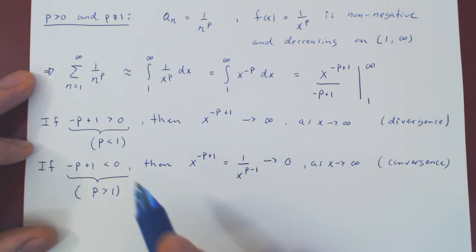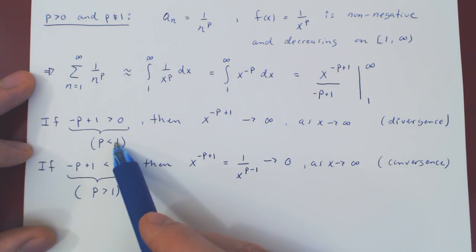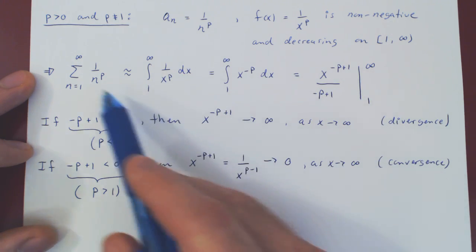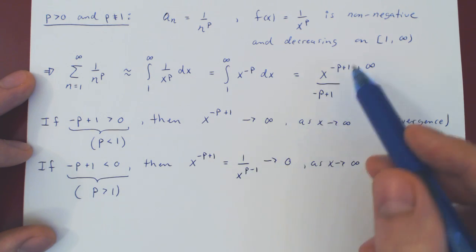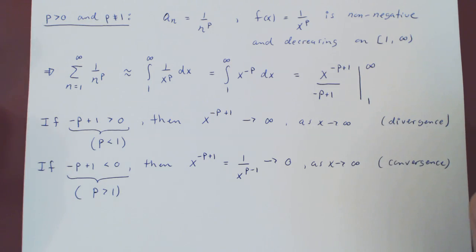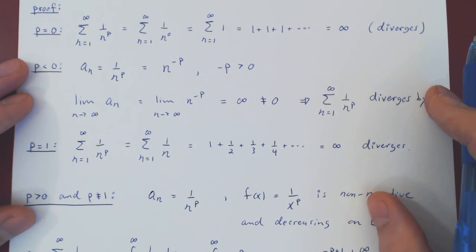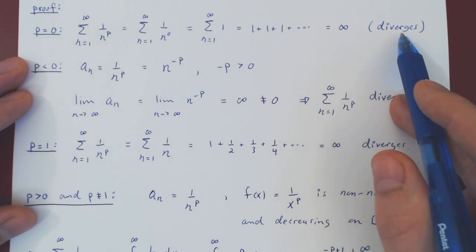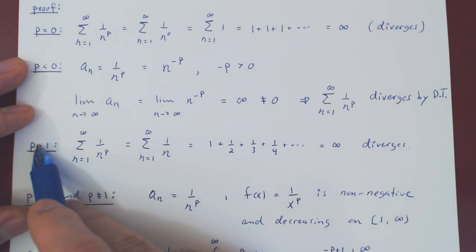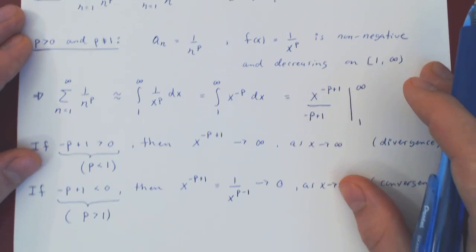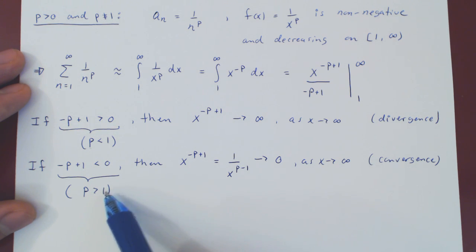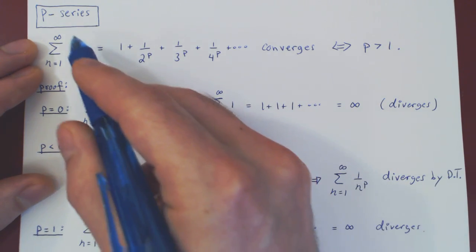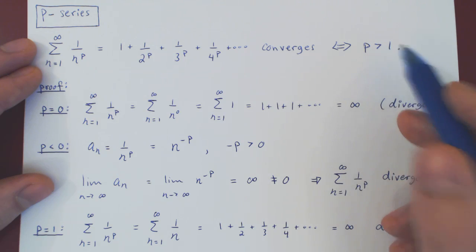Now we're done. By the integral test, if p is less than 1 the integral diverges and so the series diverges; if p is strictly larger than 1, the improper integral converges and so the series converges. Reviewing all cases: p equals 0 — divergence; p less than 0 — divergence; p equals 1 — divergence; p positive but less than 1 — divergence. Only when p is strictly larger than 1 do we have convergence, by the integral test. Our conclusion was correct: a p-series will only converge if p is strictly larger than 1.